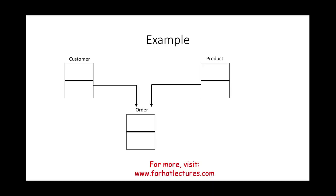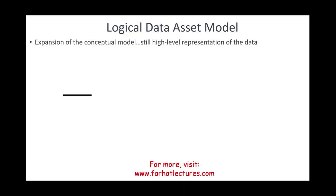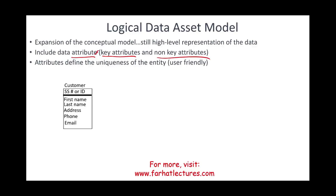Once we draft this model, we can get into the logical data asset model, or logical data model, which is an expansion of the conceptual model but still a high-level representation of the data. Now we're going to include attributes — data attributes. We're going to look at key attributes and non-key attributes. An attribute defines the uniqueness of the entity, and each entity should have a user-friendly name. For example, we could have an entity called customer.